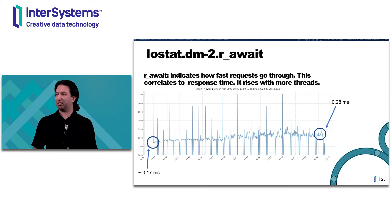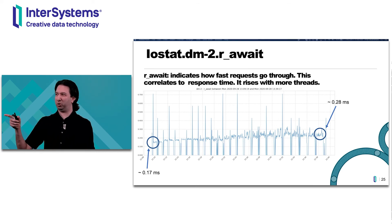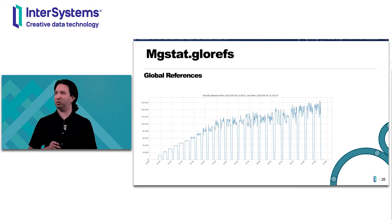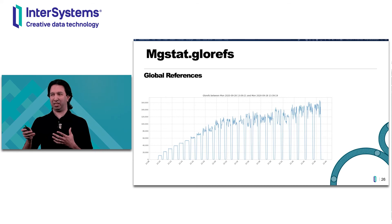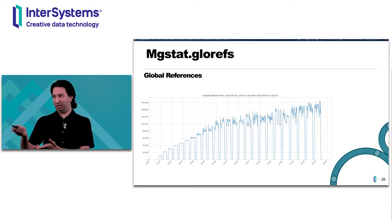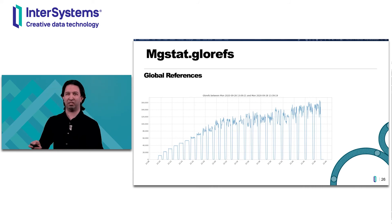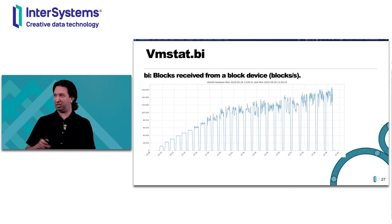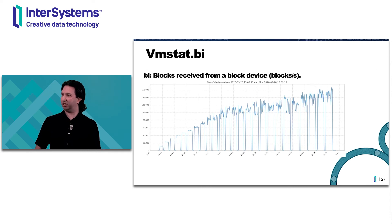The RO waits are a large part of the response time and scale with it, but they're not the complete amount — around 0.17 to 0.28 on this graph. The more threads you have, the more waits you'll see because you're saturating your CPU. Global refs are not really supposed to be affected by a view command read, but in this case they are, and they look almost identical to the other graphs — if they're wildly different, that might indicate something strange. Blocks received from an input device similarly tracks with the other graphs.